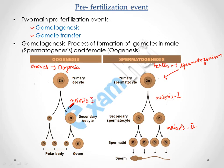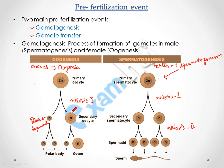Meiosis forms two cells from the oogonium — one degenerates as the polar body, and the other retains more cytoplasm. This is an uneven division. The secondary oocyte then undergoes meiosis II, which is also uneven, producing a haploid cell.